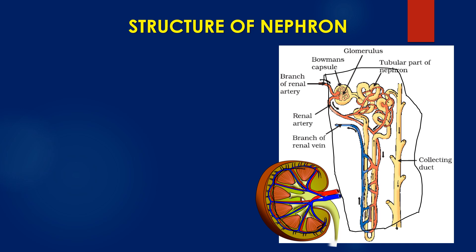Let us understand the important parts of the nephron. First, there is a cup-shaped structure called the Bowman capsule. From the Bowman capsule, there is an elongated and coiled tubular structure called the nephron tubule. This nephron tubule is connected to the collecting duct, which collects the urine from different nephrons. At the base of the nephron, you can find a U-shaped structure called Henley's Loop or Loop of Henle.